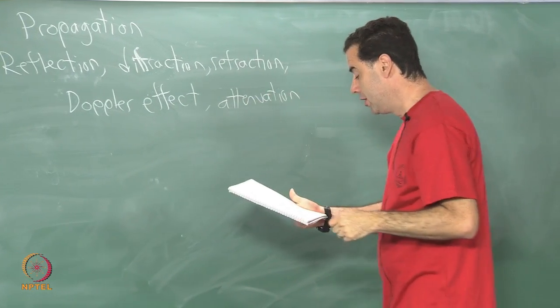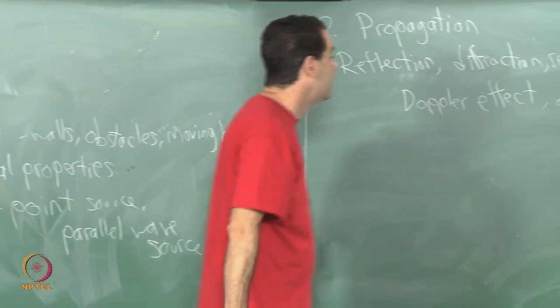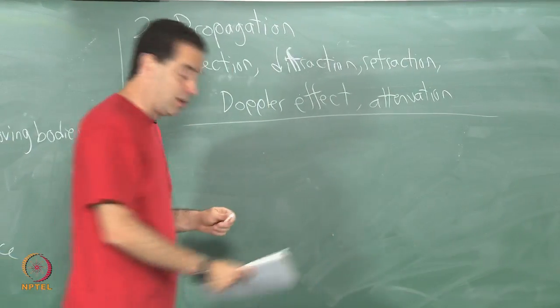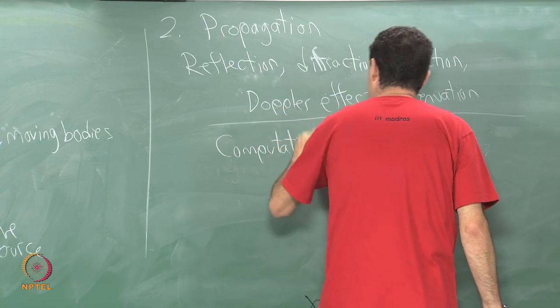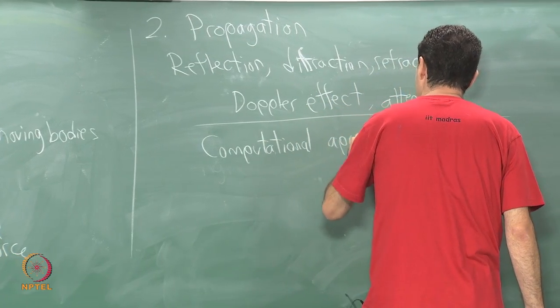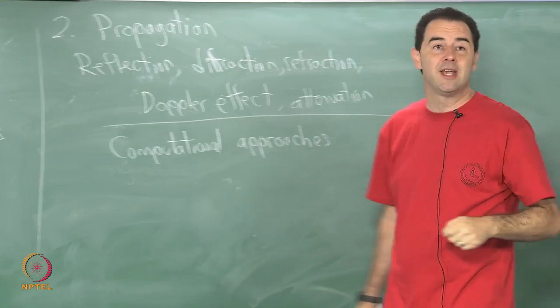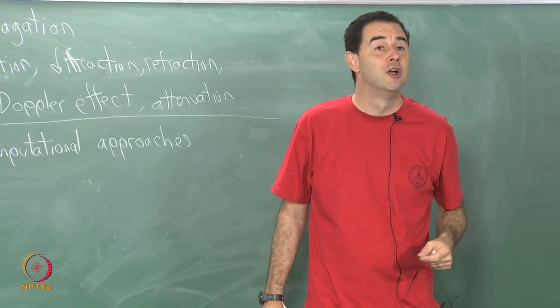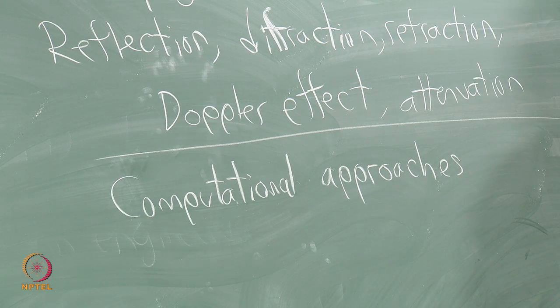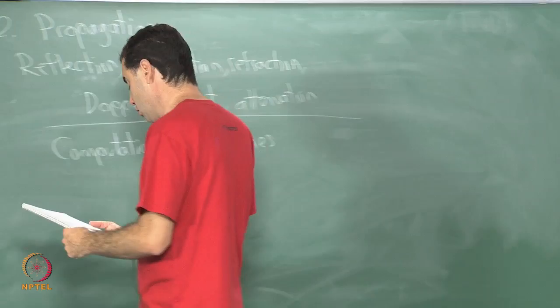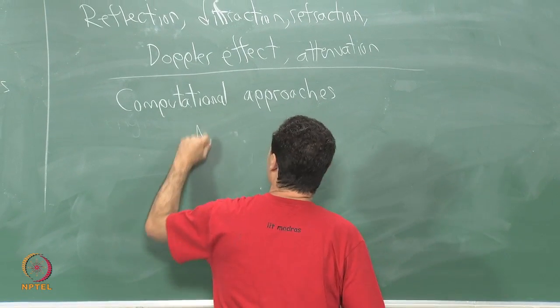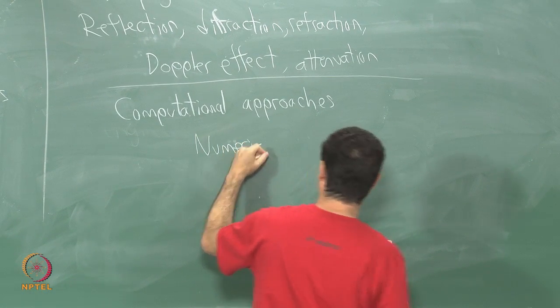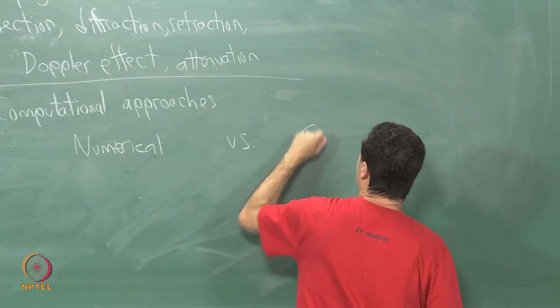These are all important types of propagation or factors that are involved in propagation. If we divide up computational approaches, remember we are making an alternate world generator. That is what we talked about very early on in the course. We are making a kind of simulator to propagate this audio that is being constructed in the virtual world. There are two big alternatives I would say at the highest level: we could do it in what I would call a numerical approach versus a combinatorial approach.